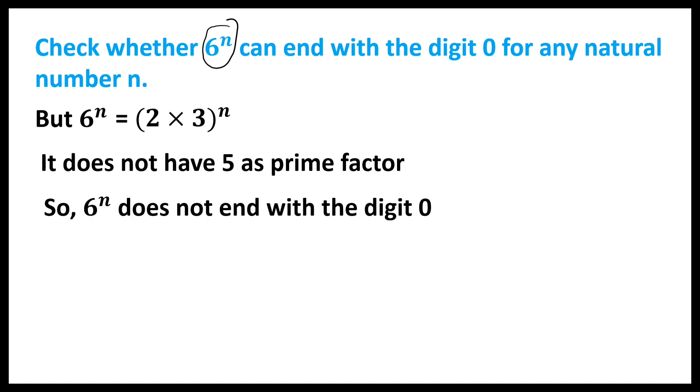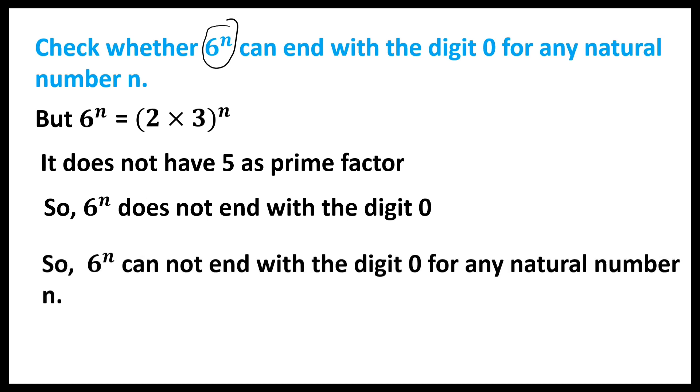So, 6^n does not end with the digit 0. Therefore, 6^n cannot end with the digit 0 for any natural number n.